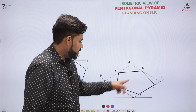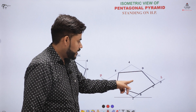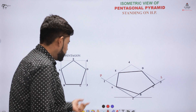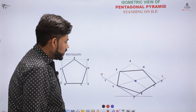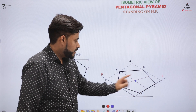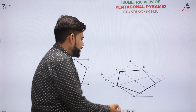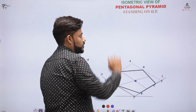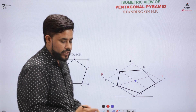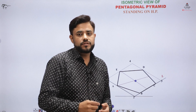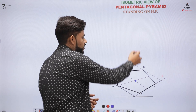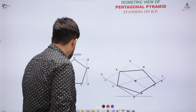Now you have to mark the central point of this surface on the ISO circle. For that, divide all these lines together so that a center is obtained. From that center, draw a perpendicular. In the question, you might be given the height of the pyramid, and you have to place a perpendicular there and mark that distance.